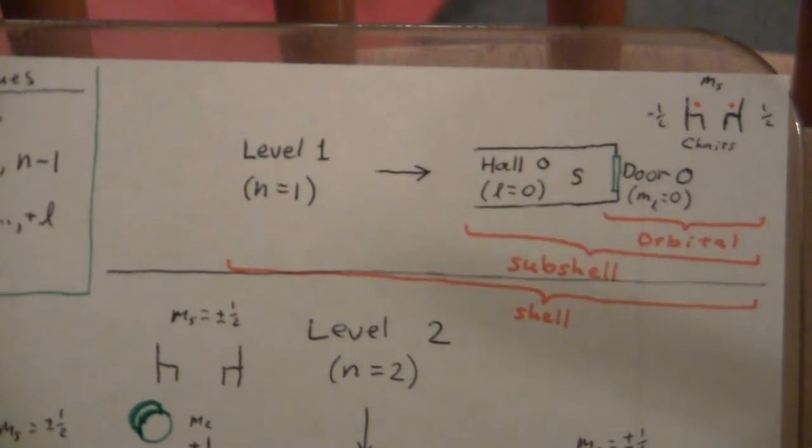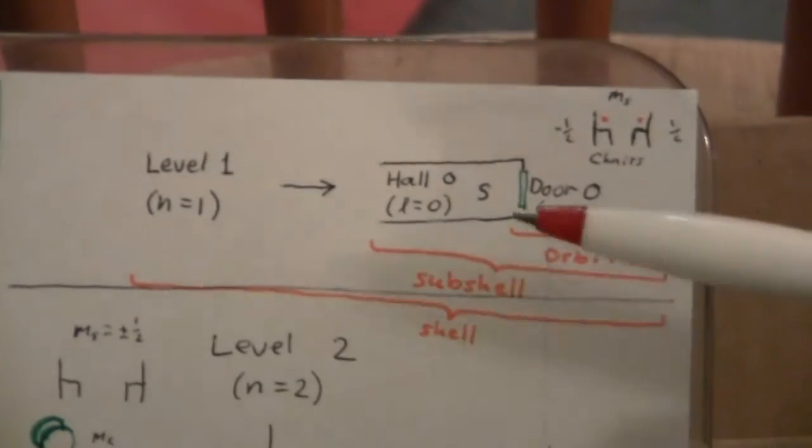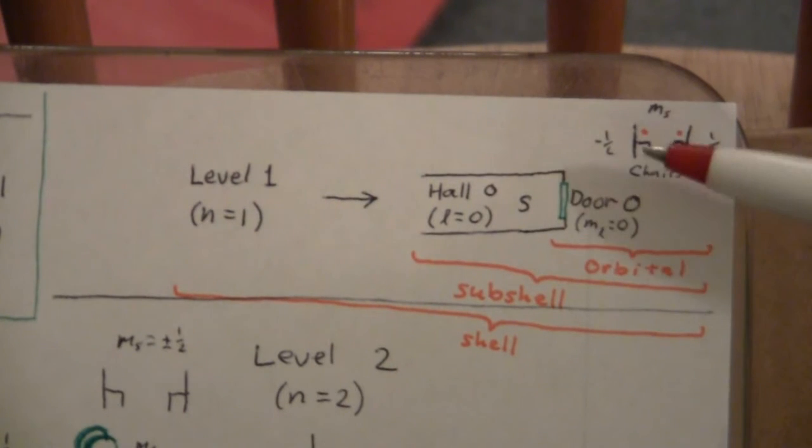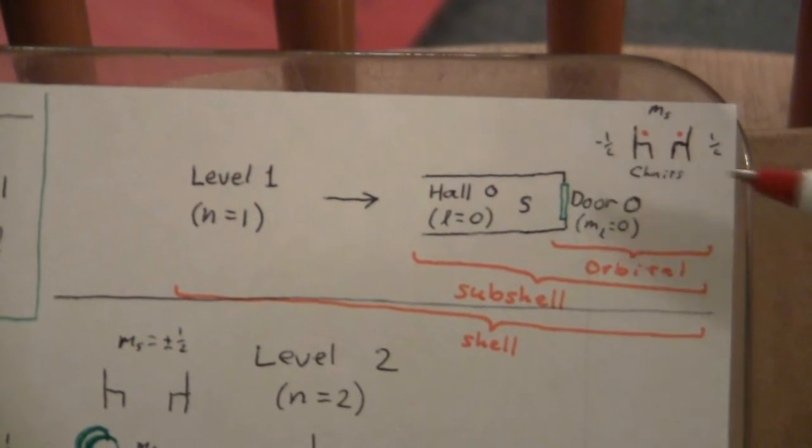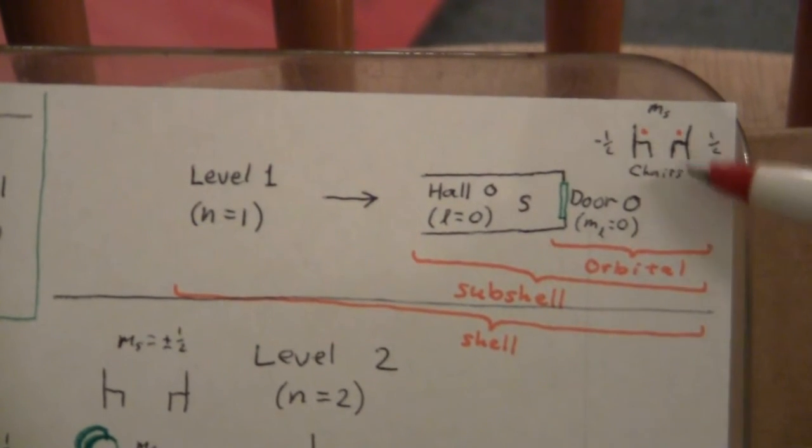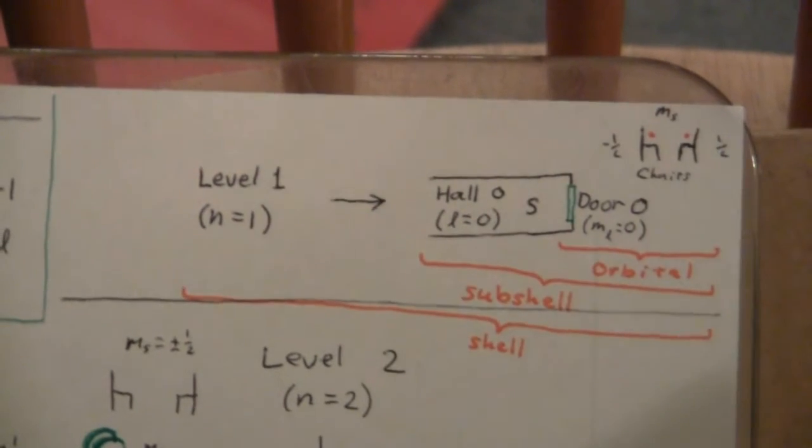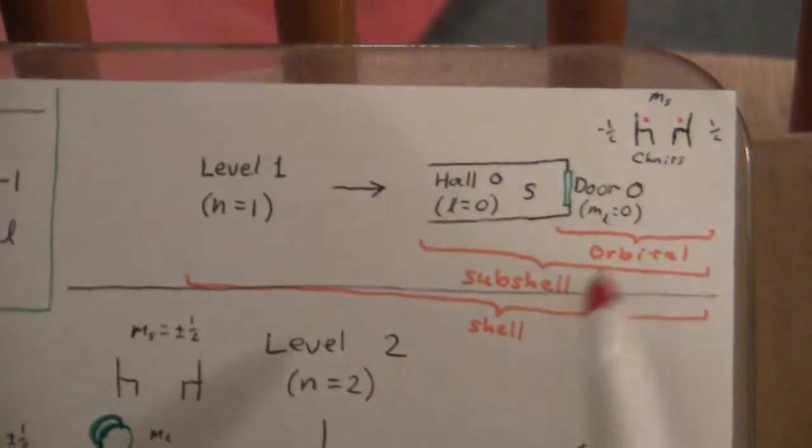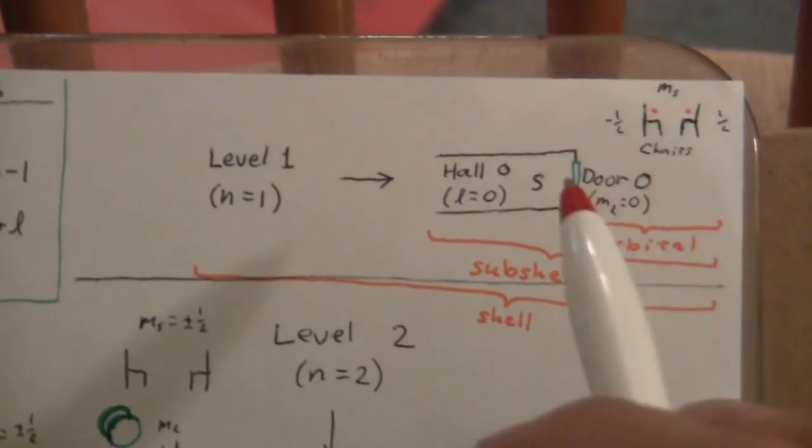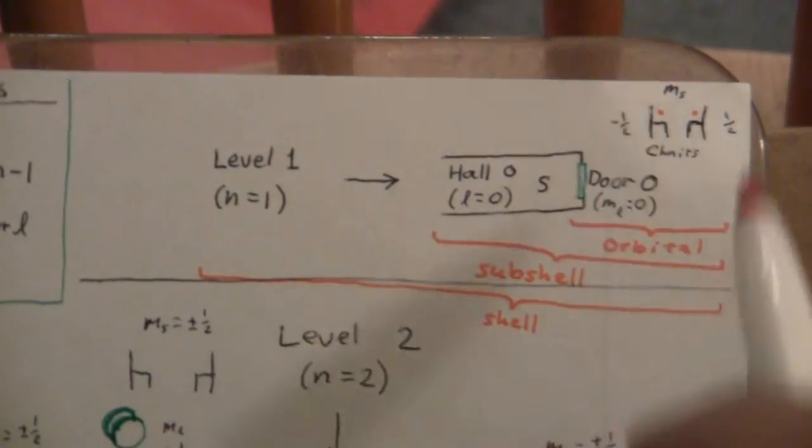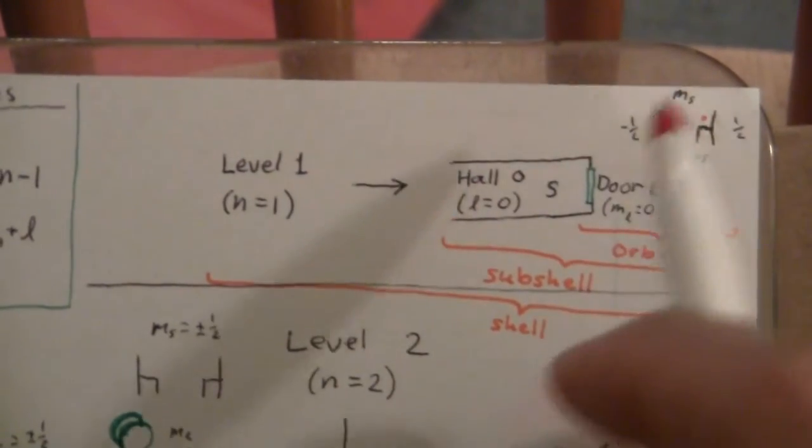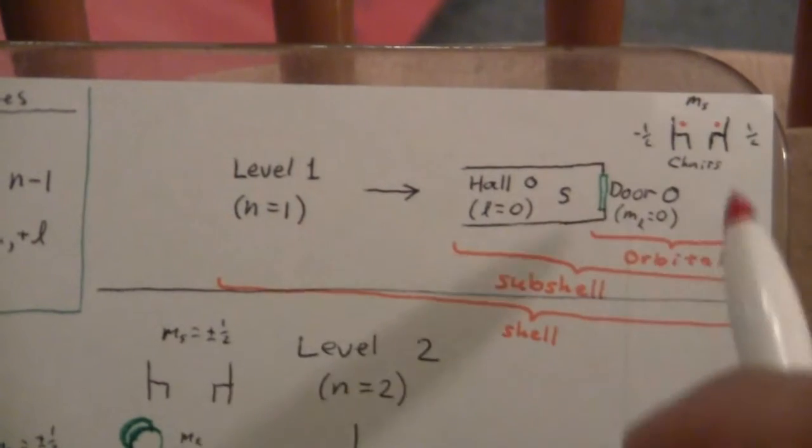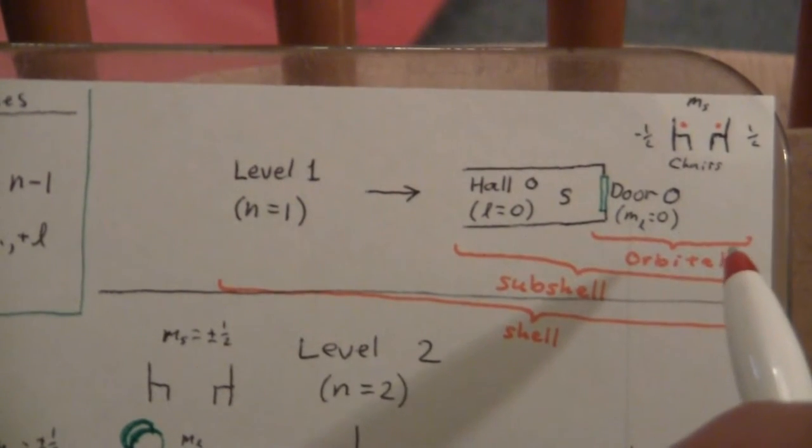And then there's the door that I have in green. That's M sub L is zero, so door zero, or room zero, however you want to think of it. And then within the room, there are the two chairs for M sub S of negative and positive one-half. And the little orange dots represent the electrons in the chairs. So here is the orbital.